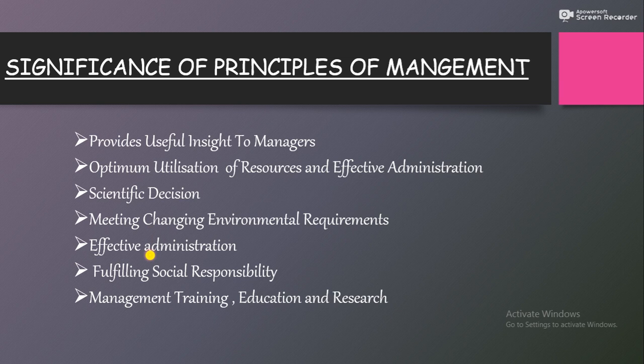Next one is effective administration. Administration کرنا top level management کا کام ہے۔ Administration is the main function of top level management — in this function major plans and policies are formed. The management principles act as guidelines and base to form various administrative policies۔ Administration کرنے کے لیے top level کو plans اور policies بنانی ہیں — اور plans اور policies کس کے base پہ بنیں گی؟ General guidelines کے base پہ — اور وہ general guidelines کہاں سے آ رہی ہیں؟ Principles of management سے۔